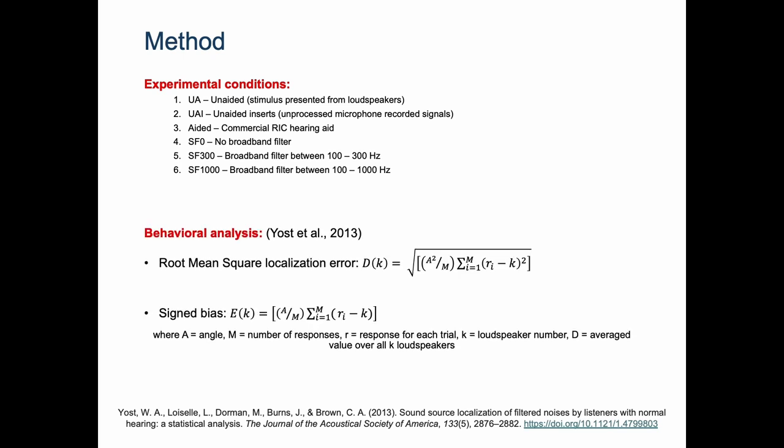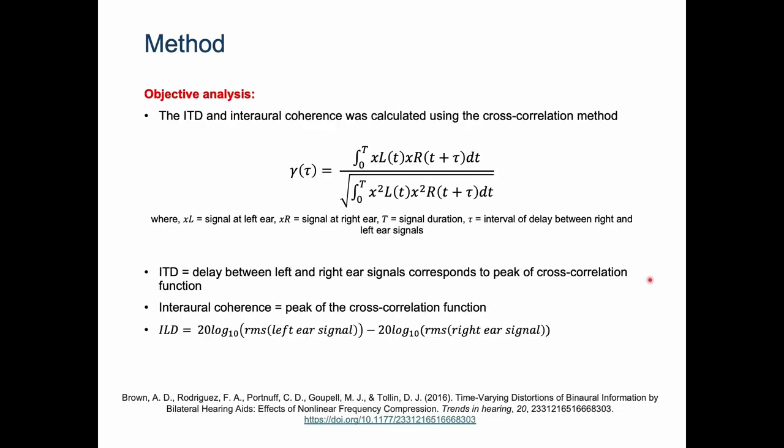The data collected from the localization experiment - the root mean square localization error and the sign bias - were calculated using this formula. For objective analysis we used the Oldenburg HRTF database to spatialize the audio signal and the spatialized stimulus was streamed to the commercial hearing aid via Bluetooth. The output of the processed spatialized signal was recorded using 2CC coupler for further analysis.